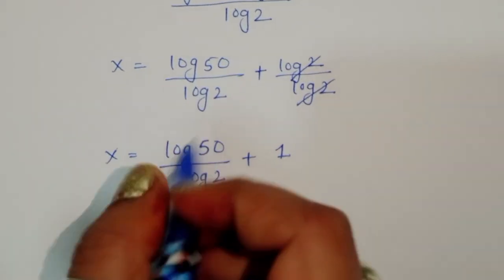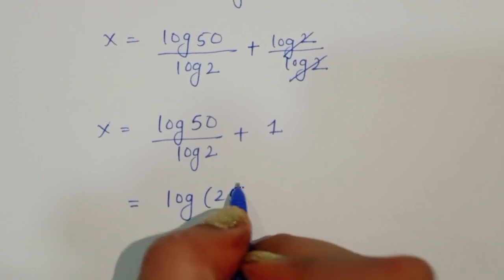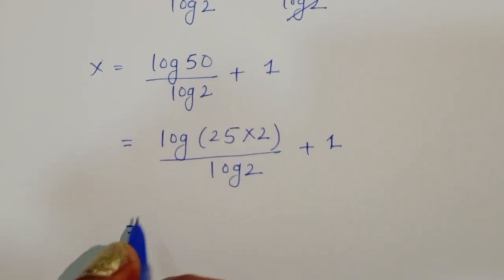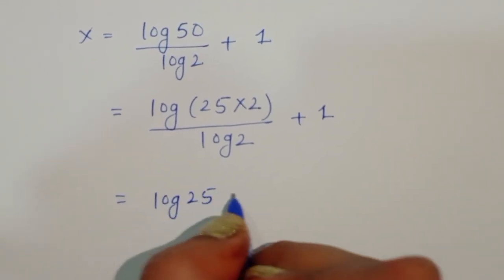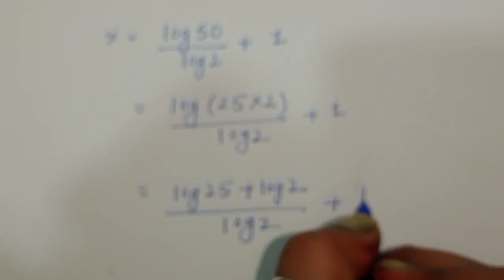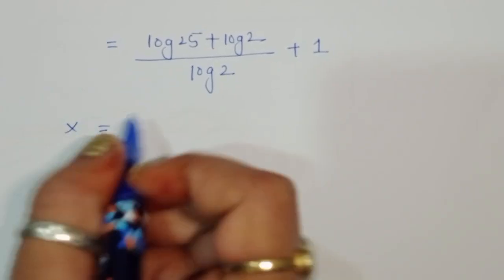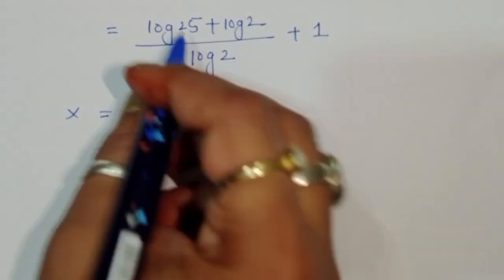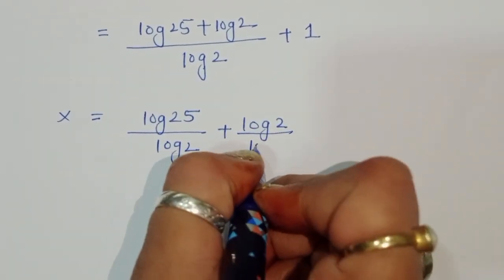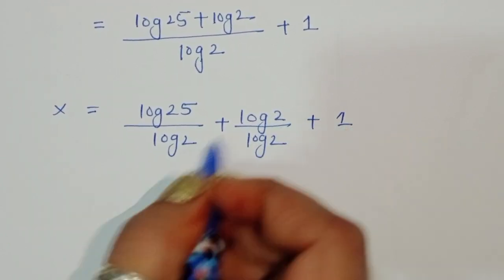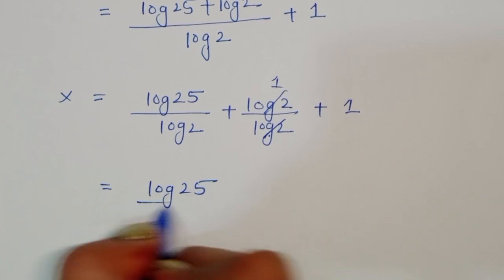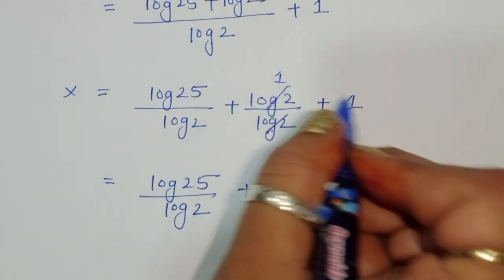Now we write log of 50 as log of 25 times 2, which expands to log of 25 plus log of 2 divided by log of 2, plus 1. Separating terms again: log 25 over log 2, plus log 2 over log 2 (which cancels to 1), plus 1. So x equals log of 25 divided by log of 2, plus 2.